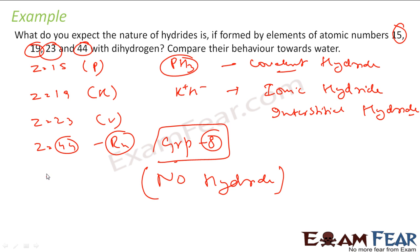So what do you do? You have to find the atomic number, with that you have to find the group. And then based on the group, you can tell whether it will be covalent hydride, ionic hydride, interstitial hydride, or no hydride.